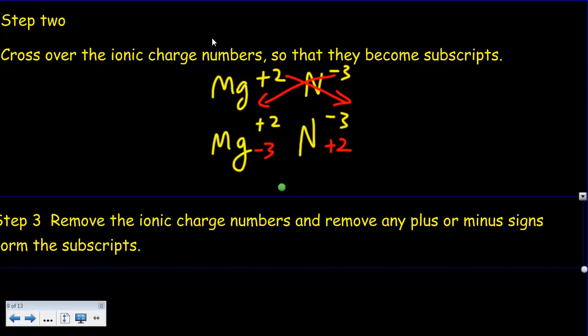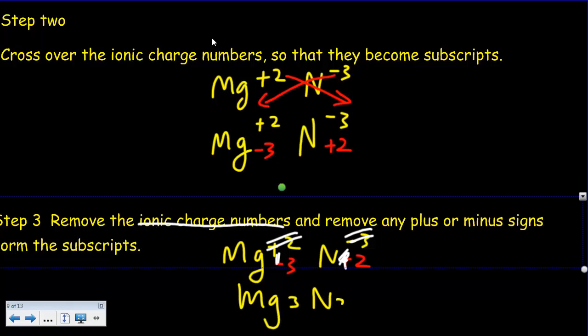Next thing it tells us to do, and eventually we're going to combine step two and step three into just one step. Step three says remove the ionic charge numbers, which means we get rid of the ionic charge numbers and remove any plus or minus sign from the subscripts. So we're going to remove that minus sign and that plus sign. And what we end up with as a final answer will be Mg3N2.